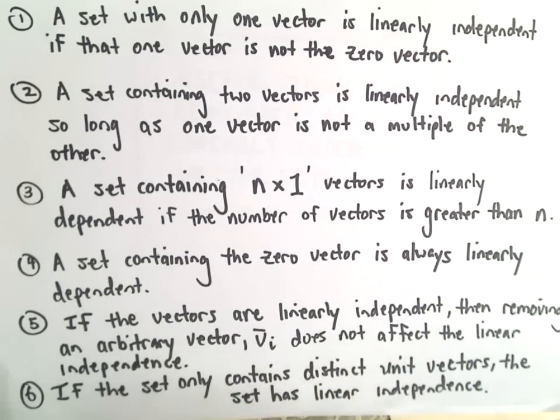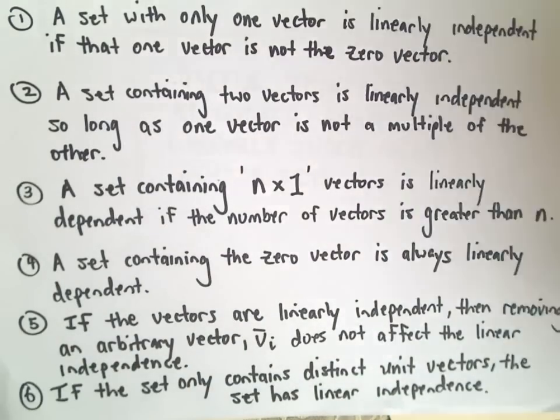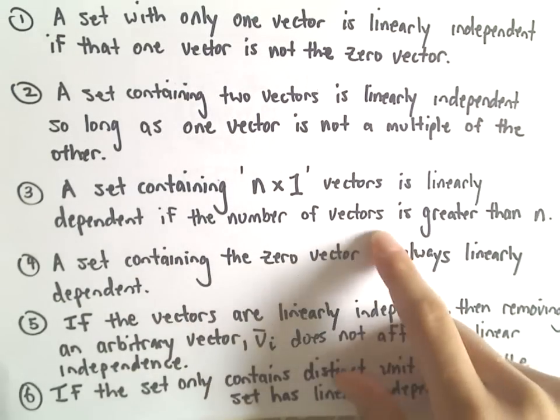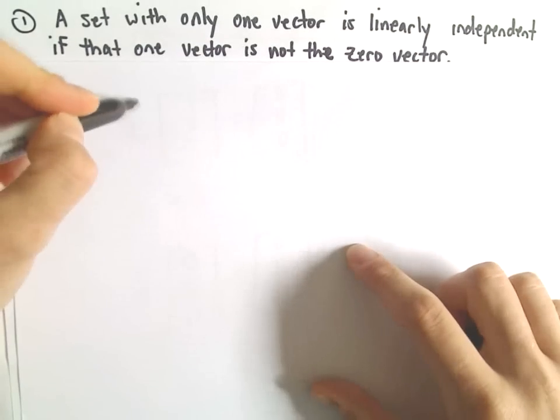The third one's very useful. If you have a set containing n×1 vectors, it's always linearly dependent if the number of vectors is greater than n. For example,